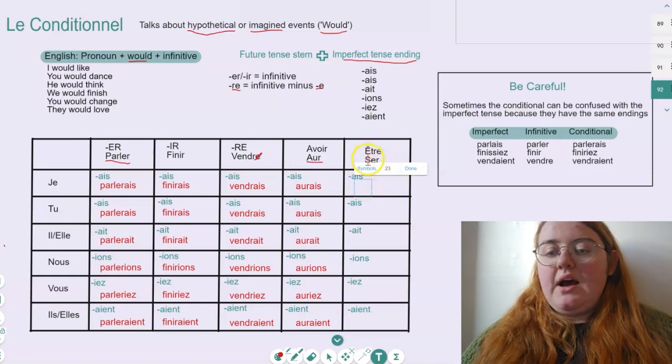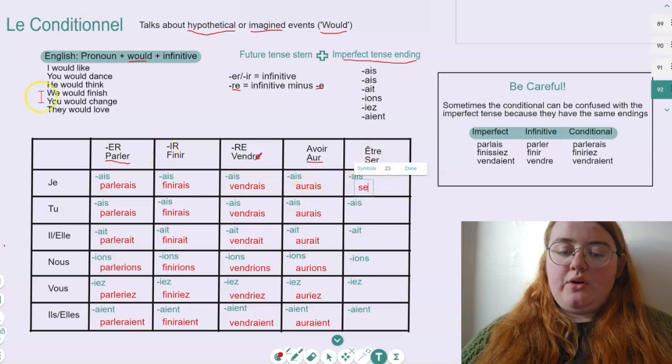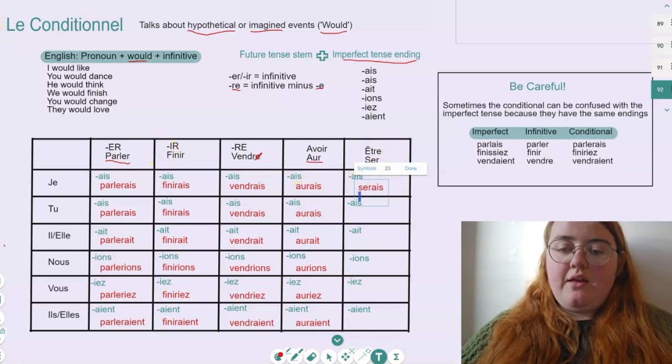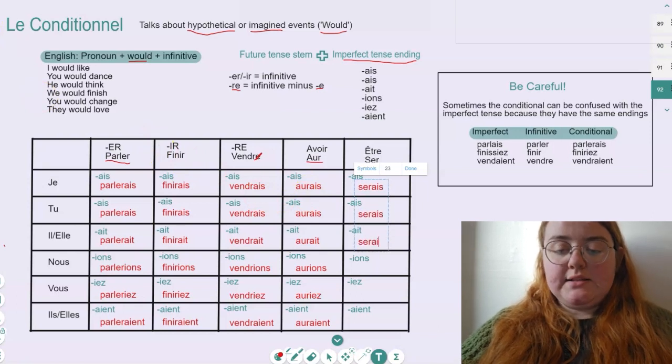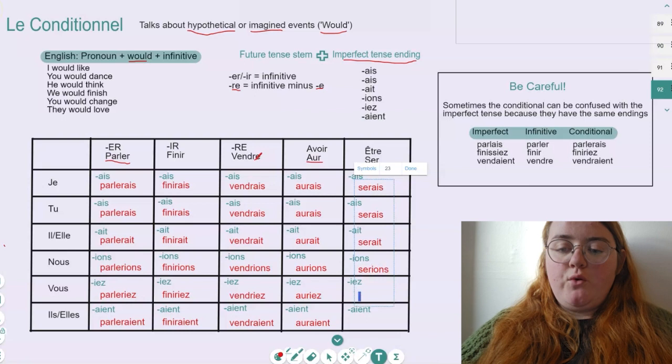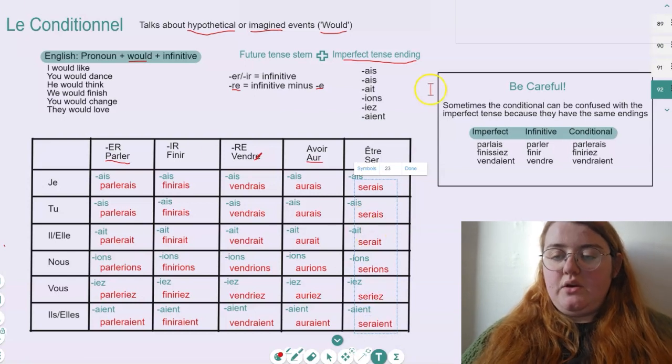Same for être. Our stem is SER, S-E-R. So then we end up with je serais, tu serais, il serait with a T, nous serions, vous seriez, and finally ils seraient.